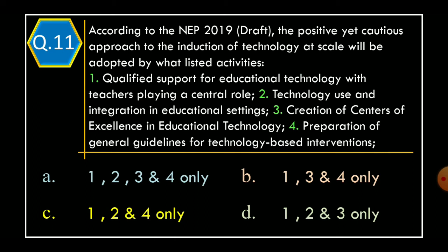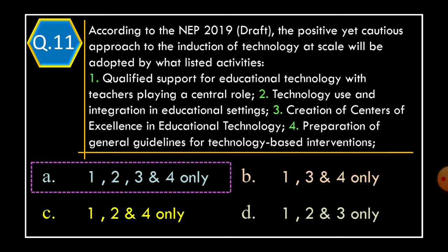Question 11. According to the NEP 2019 draft, the positive yet cautious approach to the induction of technology at scale will be adapted by which listed activities? Statement 1: Qualified support for educational technology with teachers playing a central role. Statement 2: Technology use and integration in educational settings. Statement 3: Creation of centers of excellence in educational technology. Statement 4: Preparation of general guidance for technology-based interventions. The correct option is Option A: Statements 1, 2, 3, and 4 only.